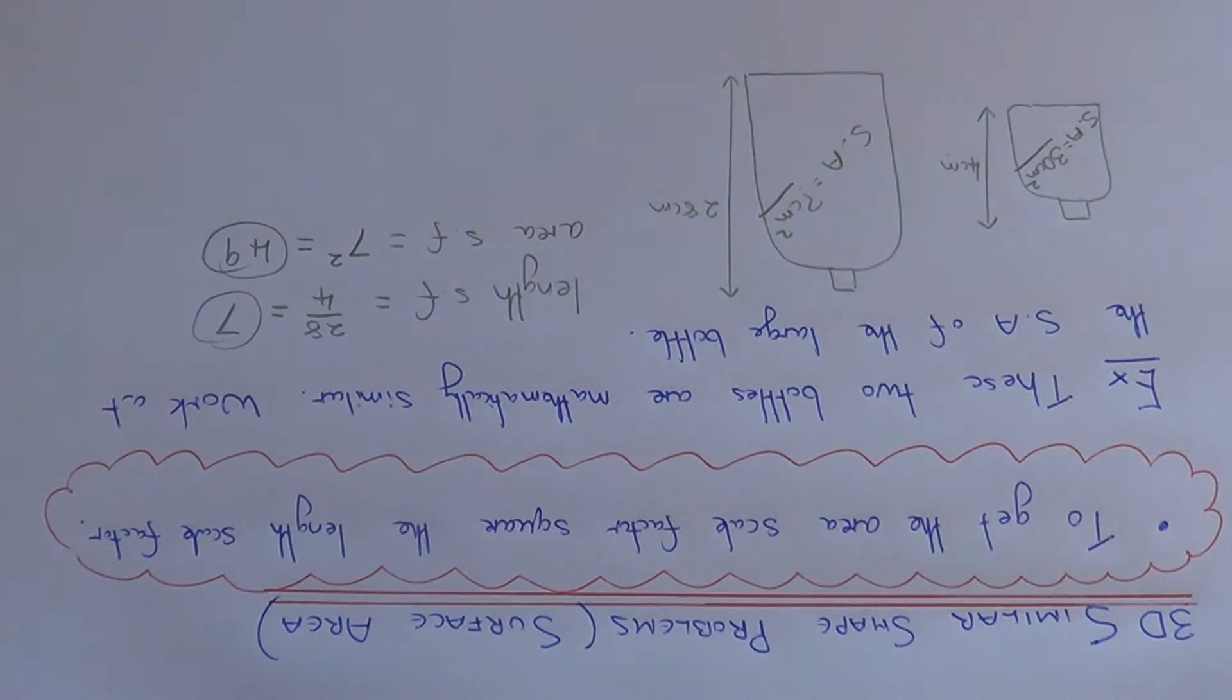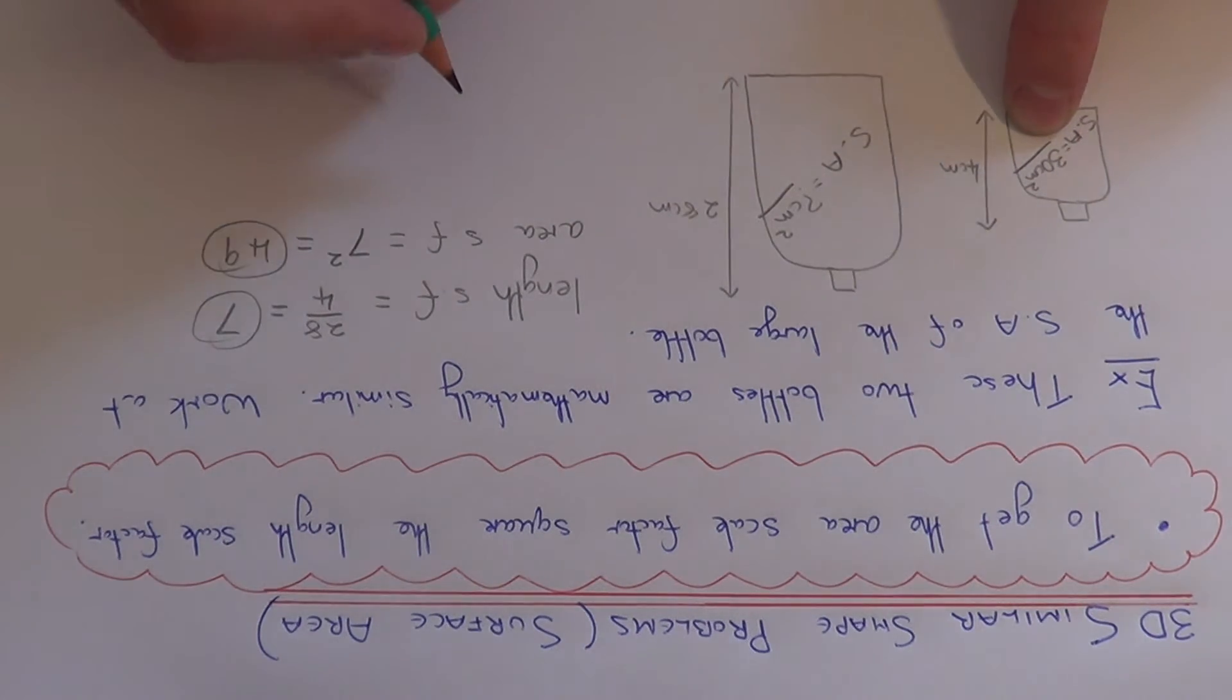So this is our key number to solve the problem. This tells us that the surface area of the bigger bottle is 49 times bigger than the surface area of the smaller bottle. So our final step will be to multiply the 30 by this 49.